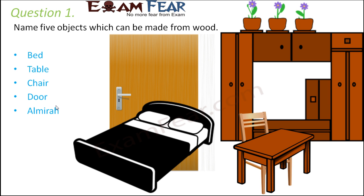Now why do you think wood can be used to make these furnitures? One thing is because wood is opaque — you do not want your door to be transparent so that people from outside can see everything inside your house. Secondly, wood is hard; it is not very soft, so that gives stability and structural strength to all these furnitures. Looking at the properties of wood, that's why it is used for making furniture.